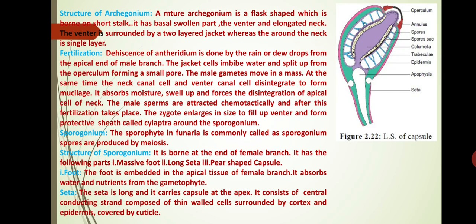The zygote enlarges in size to fill up the venter and forms a protective sheath called calyptra around the sporogonium. The sporophyte in Funaria is commonly called the sporogonium. Spores are produced by meiosis. The sporogonium is borne at the end of the female branch and has three parts: a massive foot, a long seta, and a pear-shaped capsule. The foot is embedded in the apical tissue of the female branch; it absorbs water and nutrients from the gametophyte. The seta is long and carries the capsule at its apex. It consists of a central conducting strand of thin-walled cells surrounded by a cortex, epidermis and covered by cuticle.